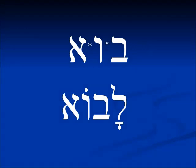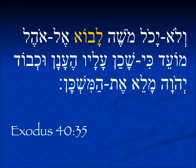This root Bo gives us an example of a hollow verb. In the hollow verbs, we see in the past and present tense we don't see the Vav or the Yud in the middle, but in the infinitive form we see the middle letter: La Vo, to come. In Exodus 40:35, V'lo Yechol Moshe Lavo El Ohel Moed — and Moses was not able to come to the tent of meeting — La Vo.